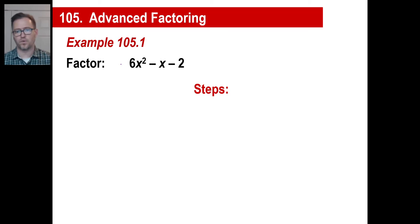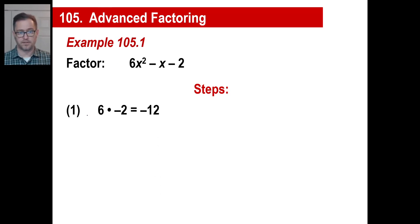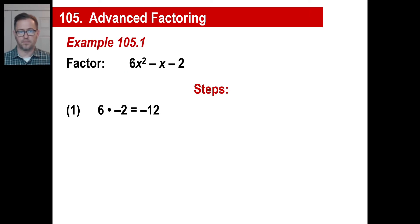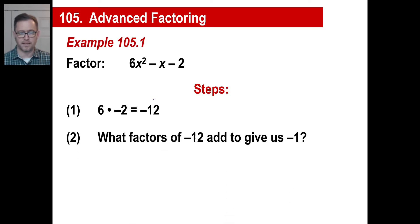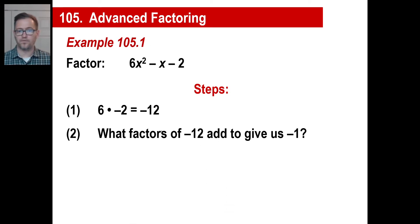Here are the steps — copy these down, pausing as you need to. Number one: multiply the lead coefficient by the constant. Using our example, 6 times negative 2 equals negative 12. So you take this number, 6, times this number, negative 2, which gives you negative 12. Step two: find what factors of negative 12 add to give you negative 1 — which is the middle coefficient. What's the answer to that?